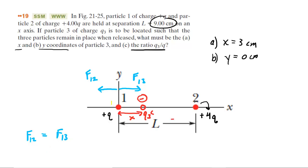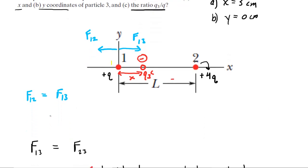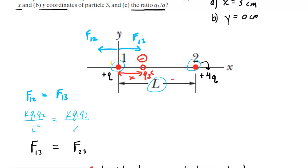For F12: K times the charge on particle one times the charge on particle two, divided by the distance between them squared. Looking at particles one and two, the distance between them is L, so we divide by L squared. Setting this equal to the force between charges one and three: K times Q1 times Q3 divided by x squared, since the distance between Q1 and Q3 was x.